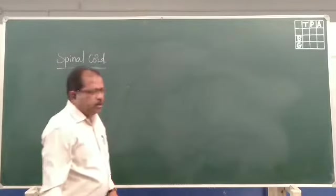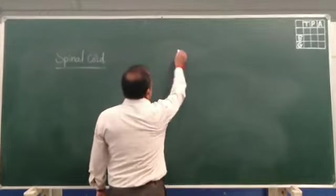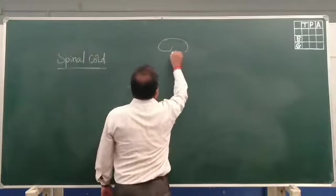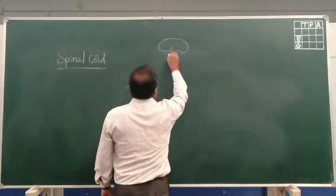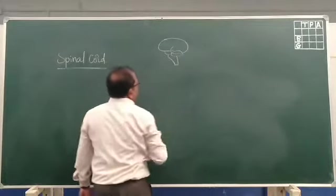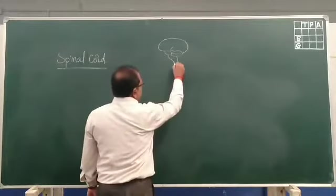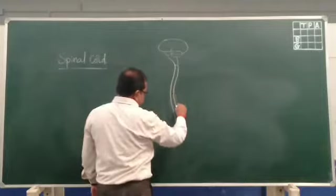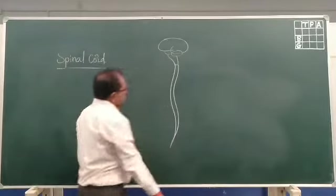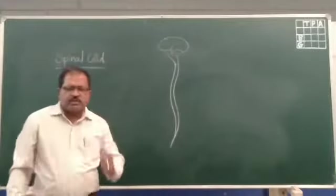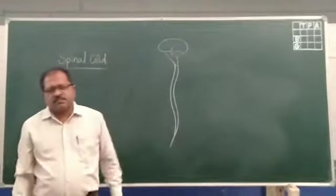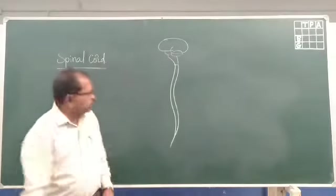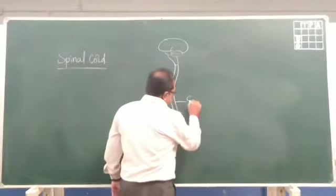The spinal cord — if you take the brain, this is the medulla oblongata. It is extended as a long needle-like structure with curves. This is called the spinal cord.